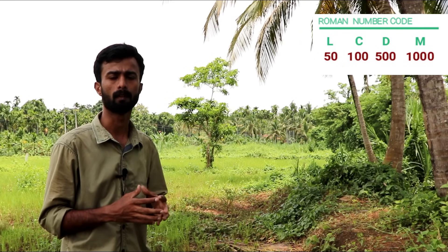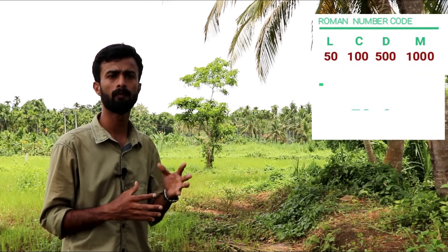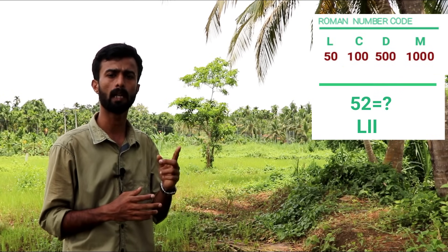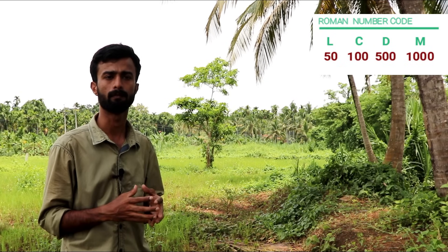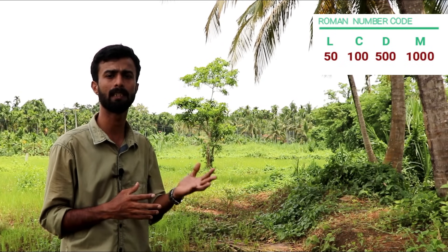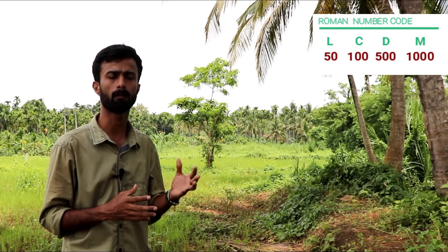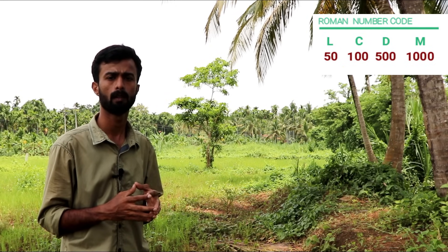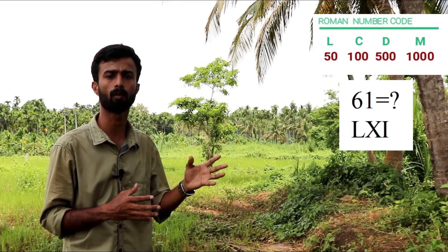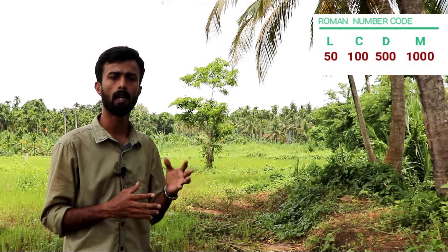We have 52. 52 is L — that is 50 — plus II, so LII. We have 61: LXI. We have 62: LXII. And 90 follows the same pattern.